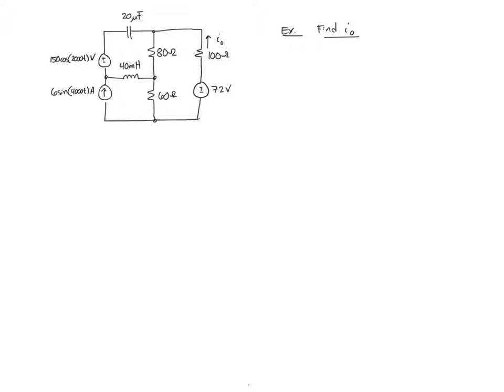This is the final video on superposition and we are going to look at solving a circuit in the frequency domain. In this particular example I want to find the current I₀ which is traversing through the 72 volt source and the 100 ohm resistor.